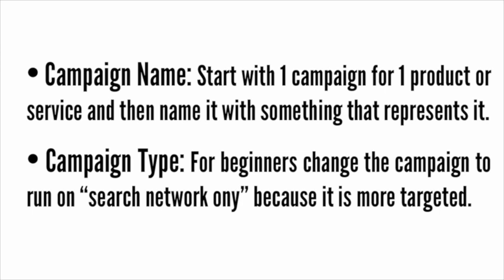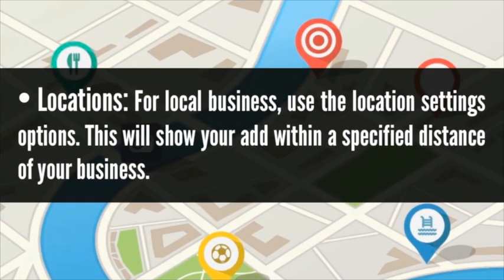For Campaign Type, all Google paid search campaigns run on both Google Search and Display Ad Network by default. For beginners, I recommend changing this setting to Search Network Only because it is more targeted. For Locations, if you're a local business, you will likely also want to use the Location Settings option on this page. This makes it so your ads only show when someone searches Google within a specified distance of your place of business.